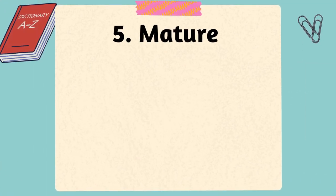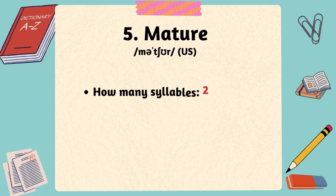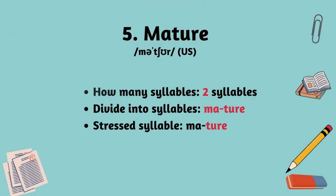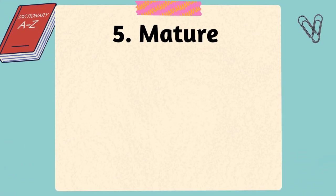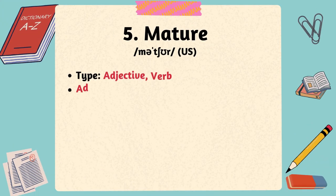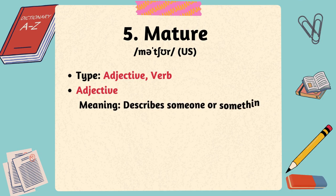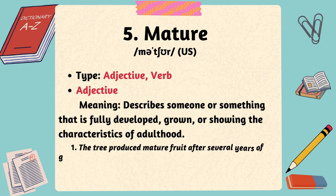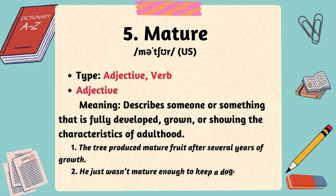The fifth word is mature. The word mature has two syllables, with the stress on the second syllable. Mature, as an adjective, describes someone or something that is fully developed, grown, or showing the characteristics of adulthood. The tree produced mature fruit after several years of growth. He just wasn't mature enough to keep a dog.